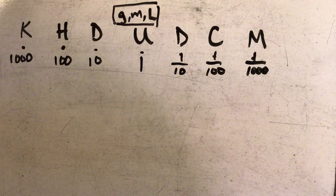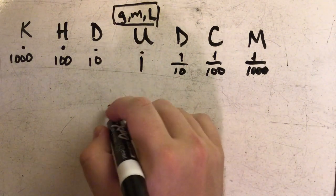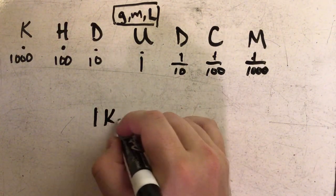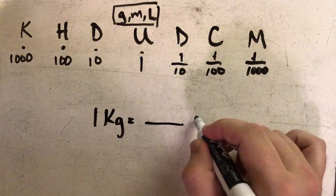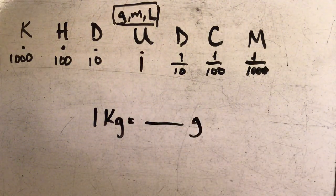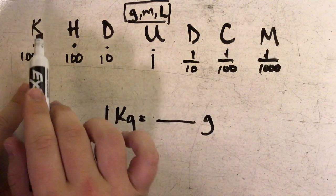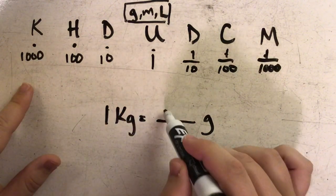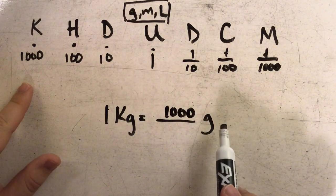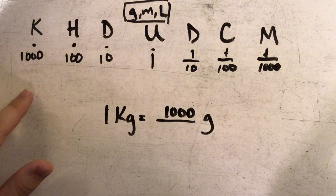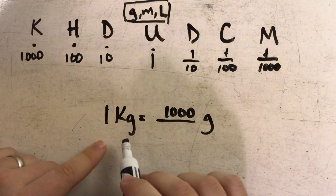Let's give an example. If I had one kilogram and I wanted to know how many grams that is, well if I look up here, I know that one kilogram is equal to a thousand grams, so I know that that's my answer. But how did I come up with that?